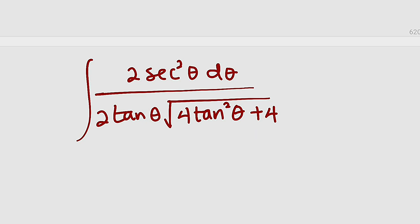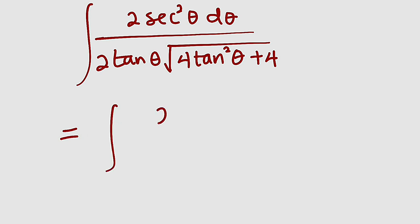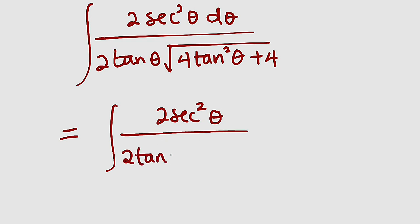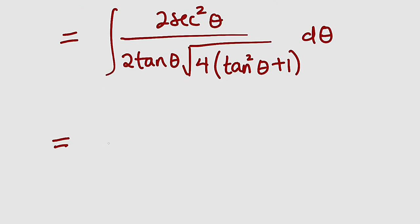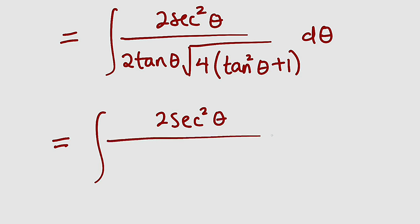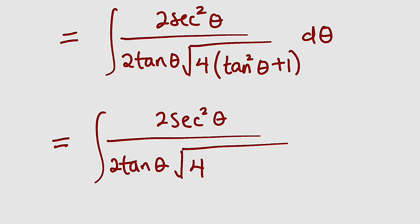We have 4 in common, so let's factor out 4. This gives us the integral of 2 secant squared theta divided by 2 tan theta, multiplied by the square root of 4 times the quantity tan squared theta plus 1. Now, tan squared theta plus 1 equals secant squared theta, so we have secant squared theta under the square root.